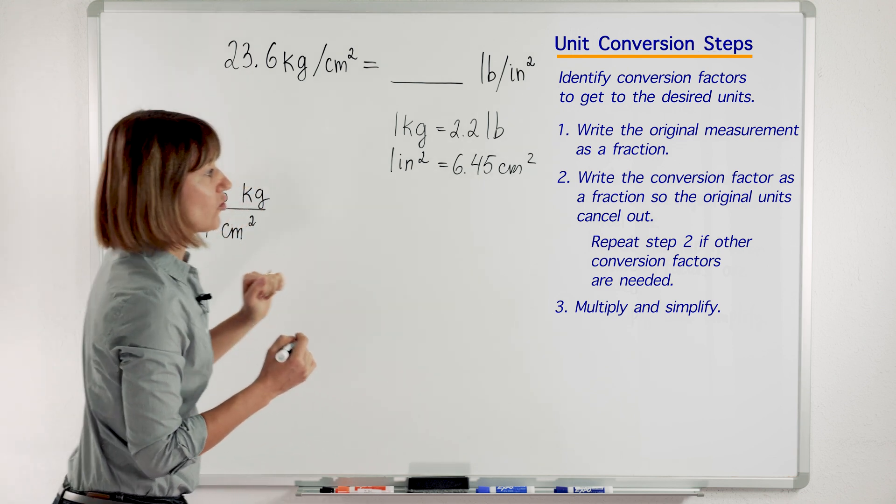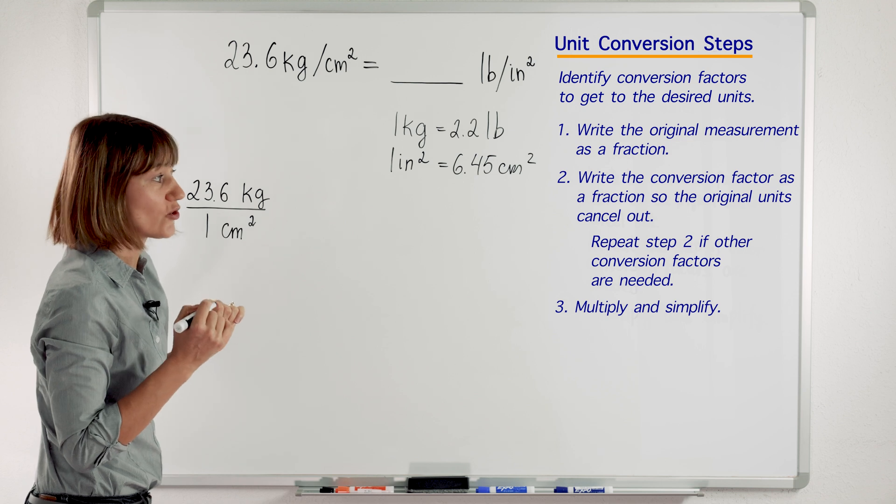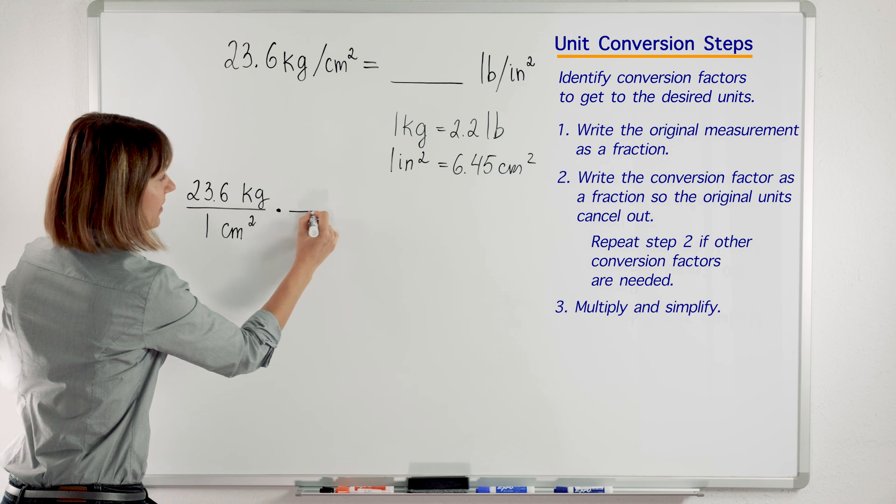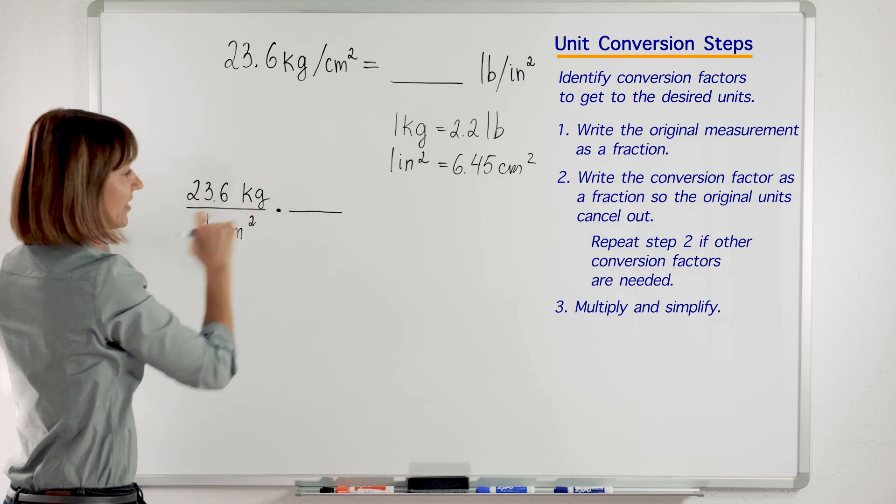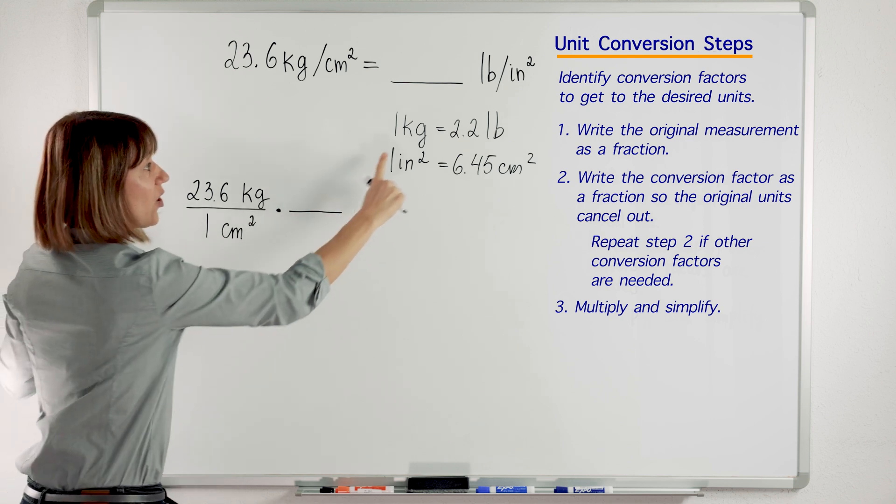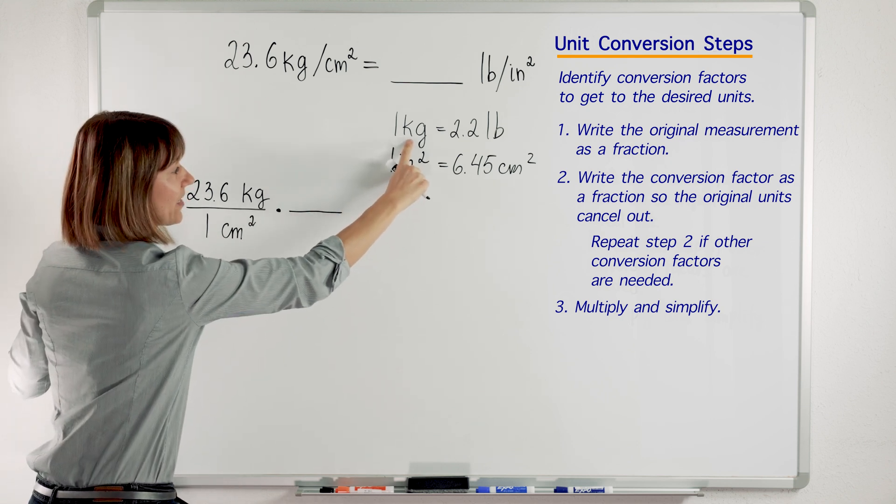The next step is write the conversion factor as a fraction to cancel the original units. Let's start with kilograms. We are going to use this conversion factor to get rid of kilograms. So I have kilograms on top in the numerator. Where will I put this one kilogram?